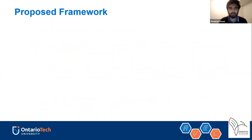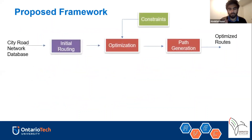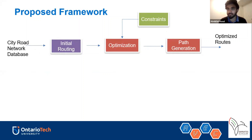The proposed framework starts with data from the city — a road network database. We did initial routing to complete the routes, then applied optimization algorithms using constraints, and finally generated the path or shortest path using different algorithms.